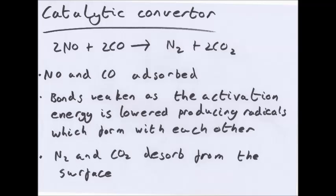Nitrogen oxide and carbon monoxide are adsorbed, not absorbed, adsorbed, onto the surface of the catalytic converter. Their bonds are weakened as the activation energy is lowered, producing radicals. These react with each other, forming N2 and CO2, and then they desorb from the surface and are released in the exhaust.